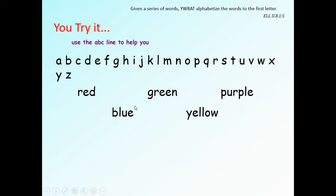What goes next? E, F, G — green. Excellent. Let's keep going down the list. P goes next, so purple. Then red. And then at the end of the alphabet we have yellow. Awesome job.